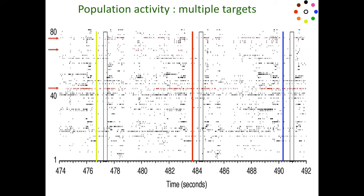Let's go back to the recording of 80 neurons. There are repeated reaches to different color-coded targets. There is a go signal, the reach is executed, and the motion to target takes about 300 to 350 milliseconds. If we take a window of 350 milliseconds and measure the firing rate of each neuron for each reach, we get a point in an 80-dimensional space — which is really hard to visualize.